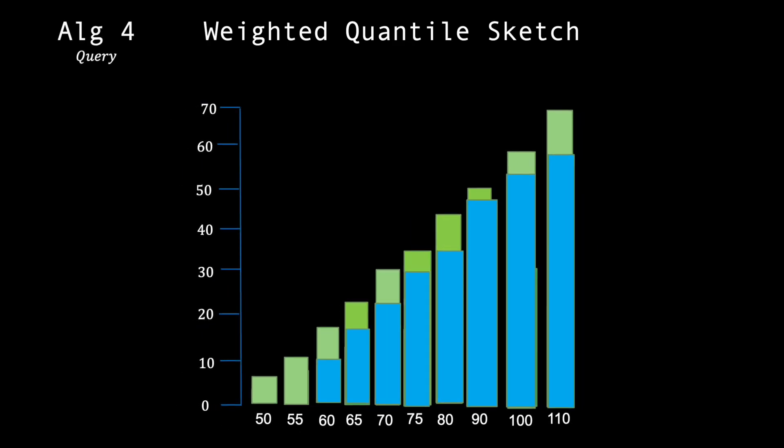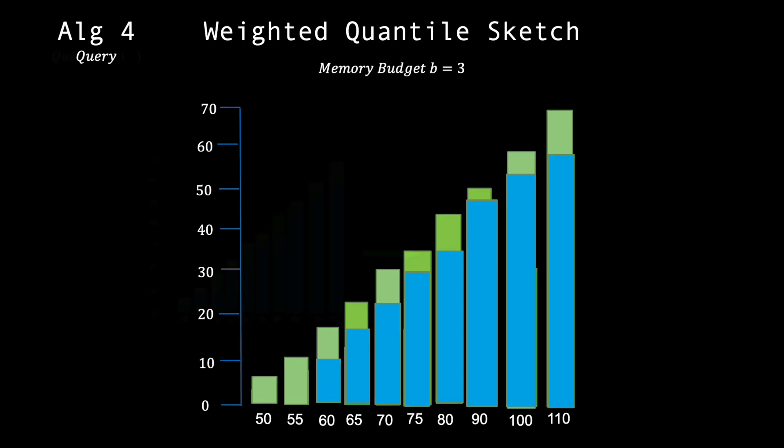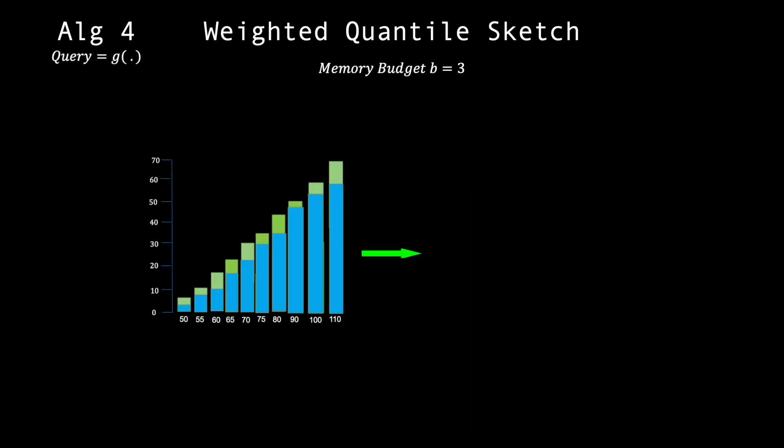We use a query function, algorithm 4, with a memory budget of B to construct a new quantile summary, Q'. The result is a new quantile summary that only needs to keep track of B plus 1 data points.